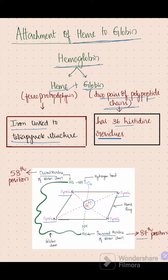The histidine present at the 87th position is called proximal histidine, whereas the histidine at the 58th position is called distal histidine. Distal histidine is linked to the iron molecule through a covalent bond along with oxygen in oxygenated hemoglobin.